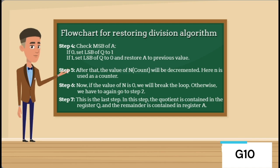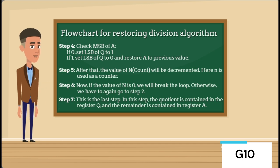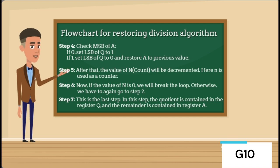Step 4: Check the MSB (most significant bit) of A. If it is 0, set the LSB of Q to 1. If it is 1, set the LSB of Q to 0 and restore A to its previous value. LSB here means least significant bit. Step 5: Decrement the value of N, which is used as a counter. Step 6: If the value of N is 0, break the loop; otherwise, go back to Step 2.